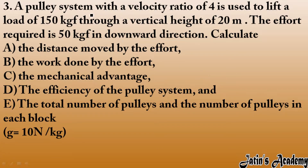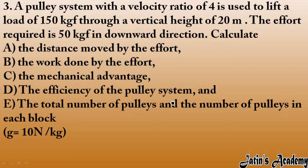A pulley system with a velocity ratio of 4 is used to lift a load of 150 kgf through a vertical height of 20 m. The effort required is 50 kgf in the downward direction. Calculate: the distance moved by effort, the work done by effort, the mechanical advantage, the efficiency of the pulley system, and the total number of pulleys and the number of pulleys in each block.